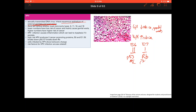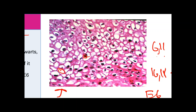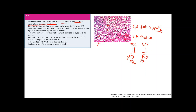All cells infected by HPV — regardless of type — show koilocytic change: clearing of the cytoplasm with large white areas and shrunken, raisin-like nuclei. Risk factors for HPV are all sex-related: multiple sex partners and early age of sexual activity.